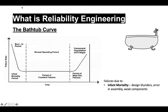These failures are detected using burn-in and accelerated life tests — testing methodologies we'll discuss in detail later in the course. The defects are detected, weaker components are replaced, design improvements are made, and if required, redundancies are employed. Over a period of time the failure rate is reduced until it becomes constant.